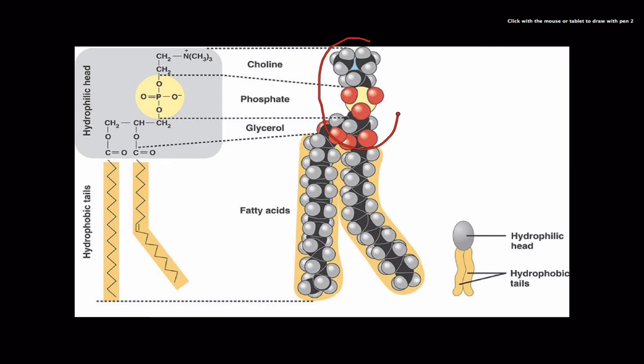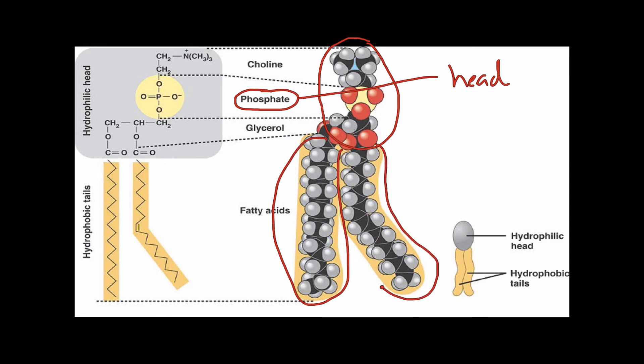There's a bunch of stuff going on up here, but the most important thing about the head end to remember is a phosphate group. So we can call this the phosphate head, and down here hanging off the head are two fatty acid chains, and you already know what fatty acids look like, so here they are.